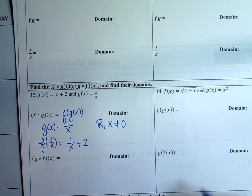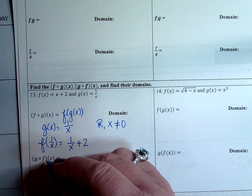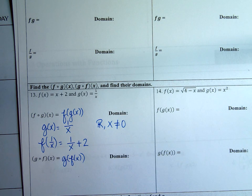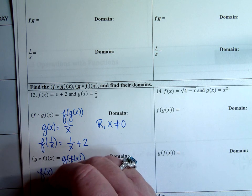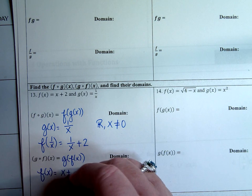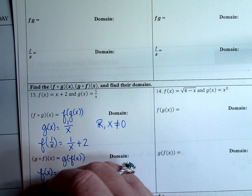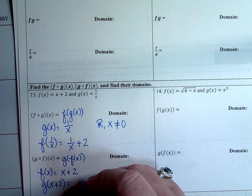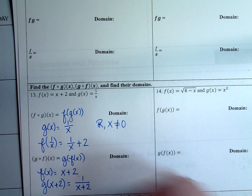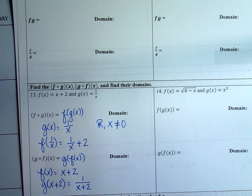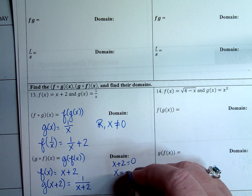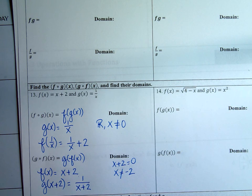Now for goff: find G of F of x. F of x is x plus 2, so plugging that into G gives G of x plus 2, which equals 1 over x plus 2. The denominator can't equal 0, so when would x plus 2 equal 0? When x equals negative 2. So the domain restriction is x cannot equal negative 2.